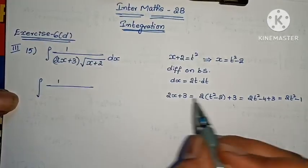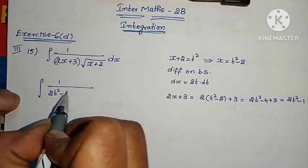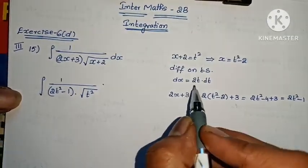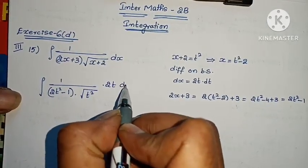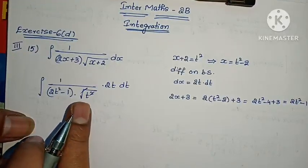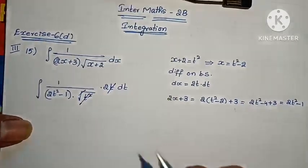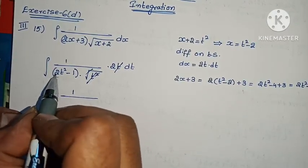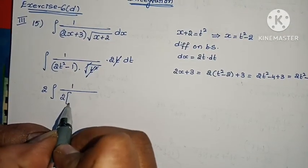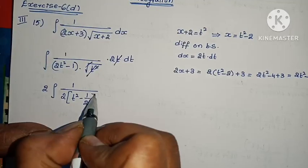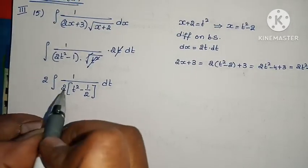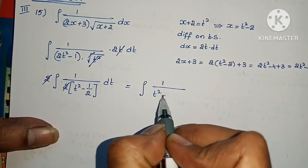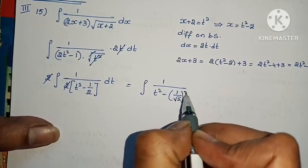Substituting all values: 1 by (2t squared minus 1) into root of (x plus 2), which is t, and dx becomes 2t dt. After substitution we get 2t dt over (2t squared minus 1) into t, and the t terms cancel.